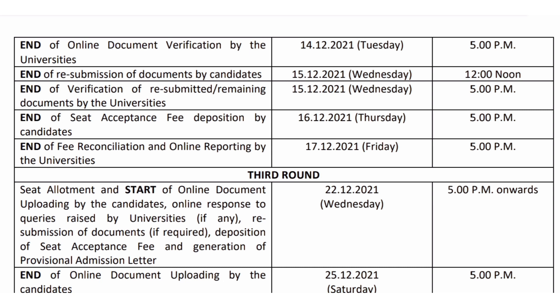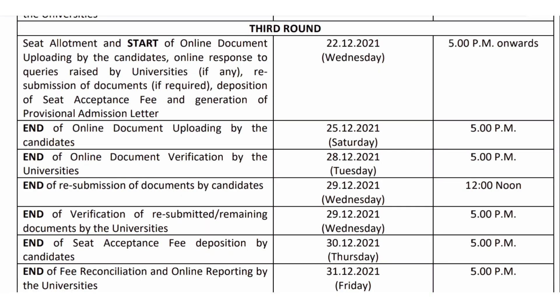After the second round, if a candidate still doesn't get any seat, the third round of allotment takes place. Seat allotment and start of online document uploading will begin from 22nd of December 2021 from 5 PM onwards. The end of document uploading by the candidate is 25th of December 2021 at 5 PM, and the end of document verification by universities is 27th of December 2021 at 5 PM.